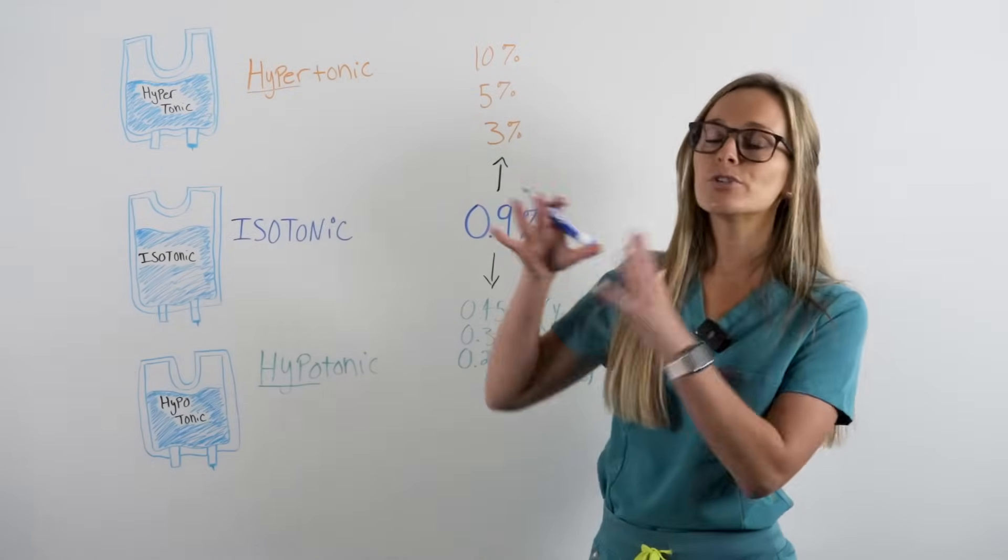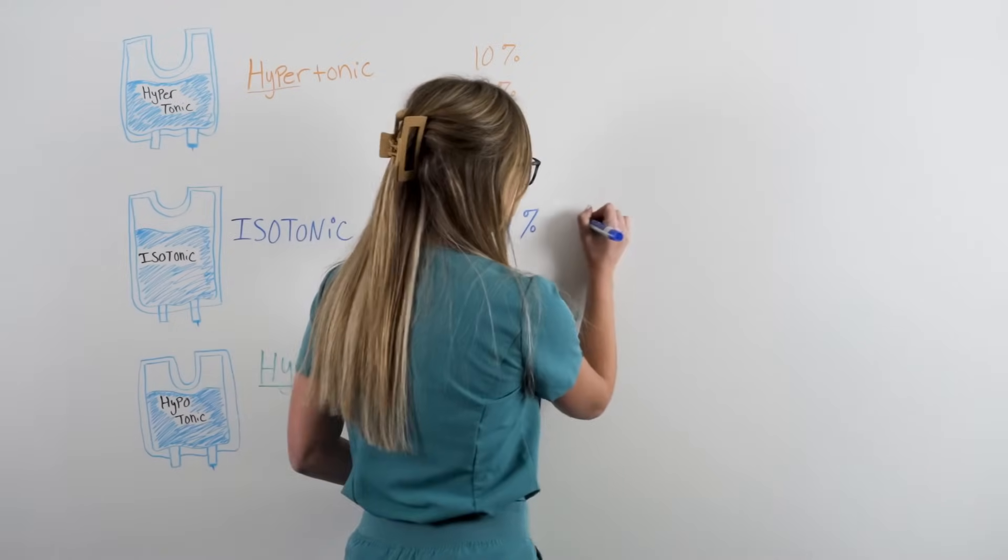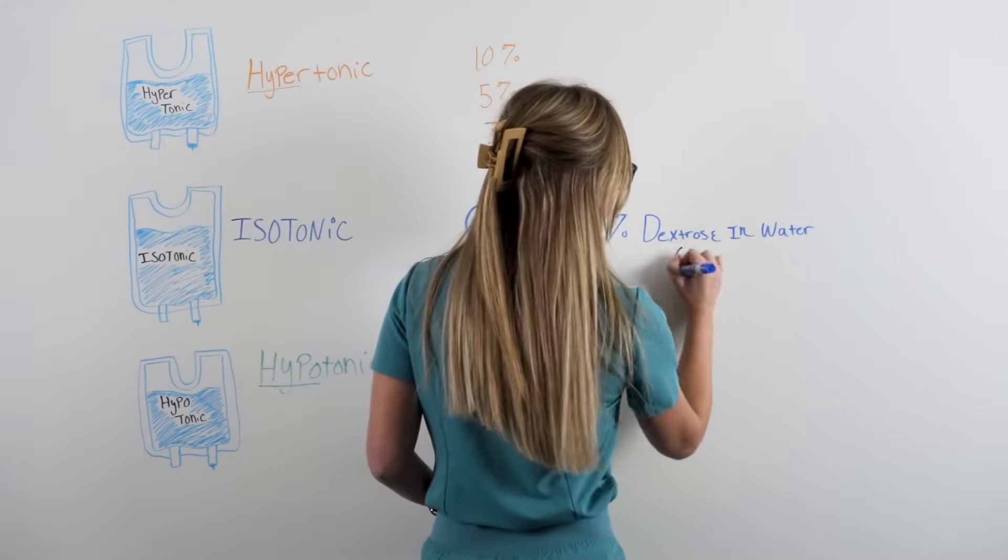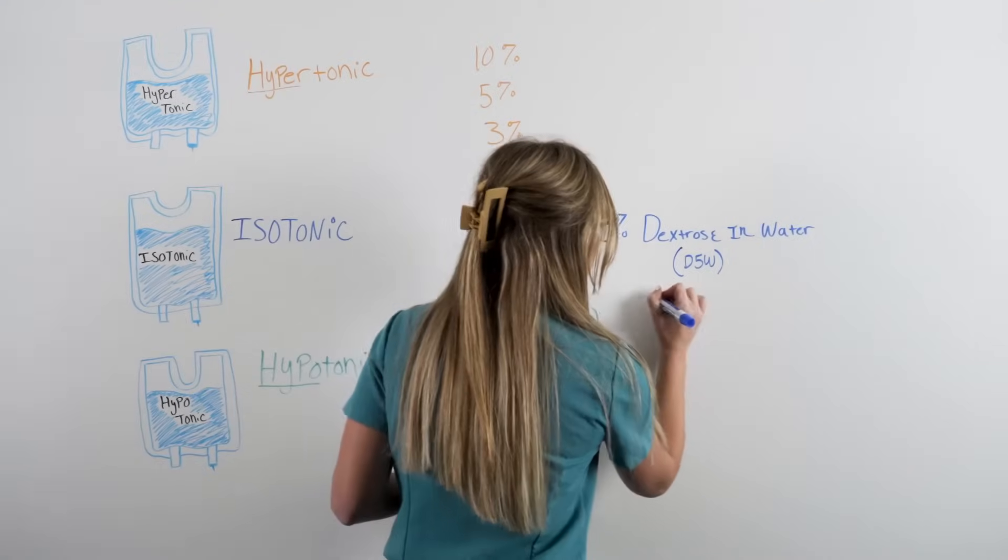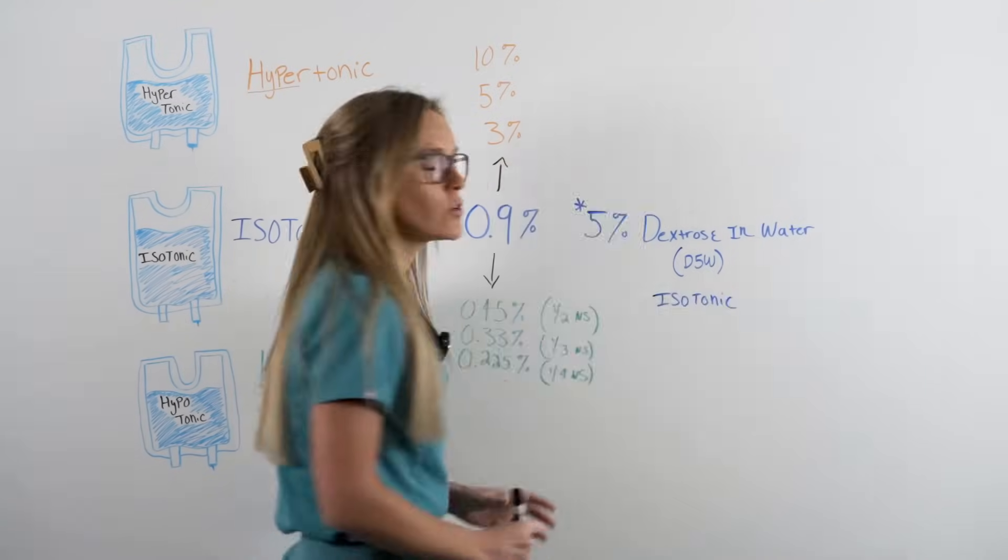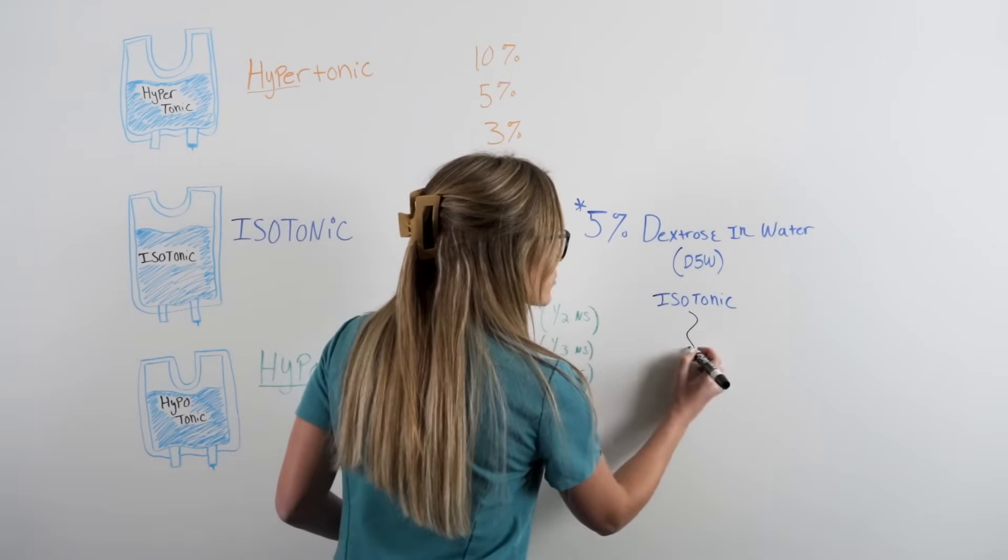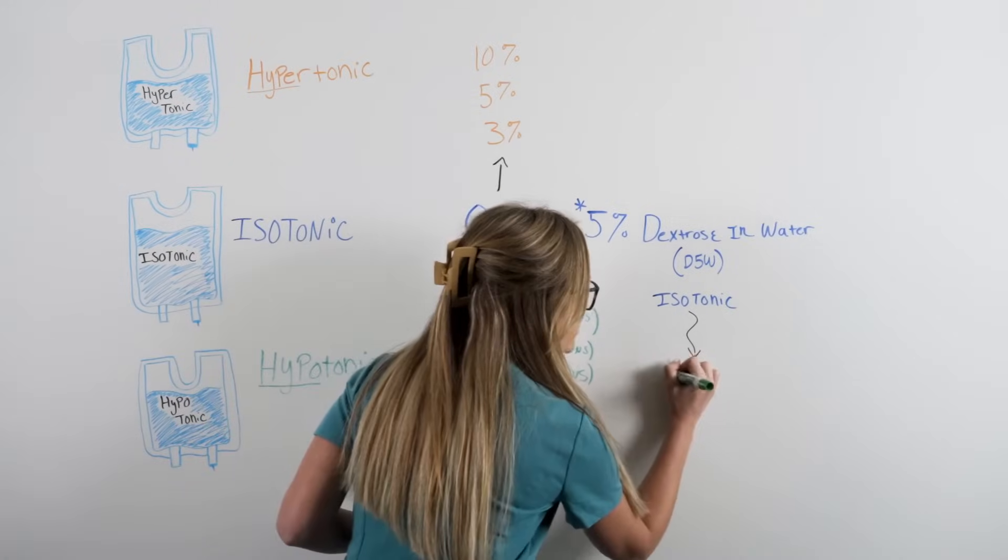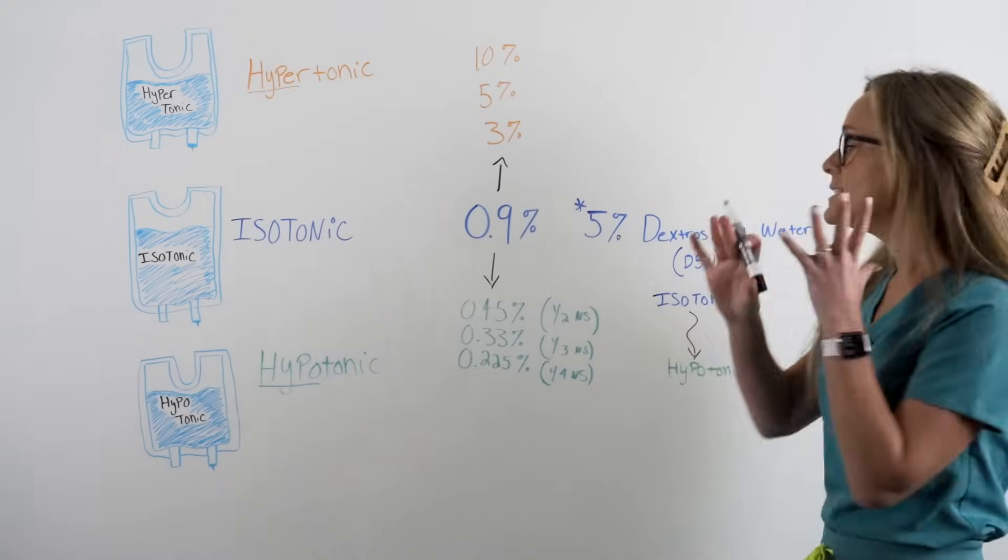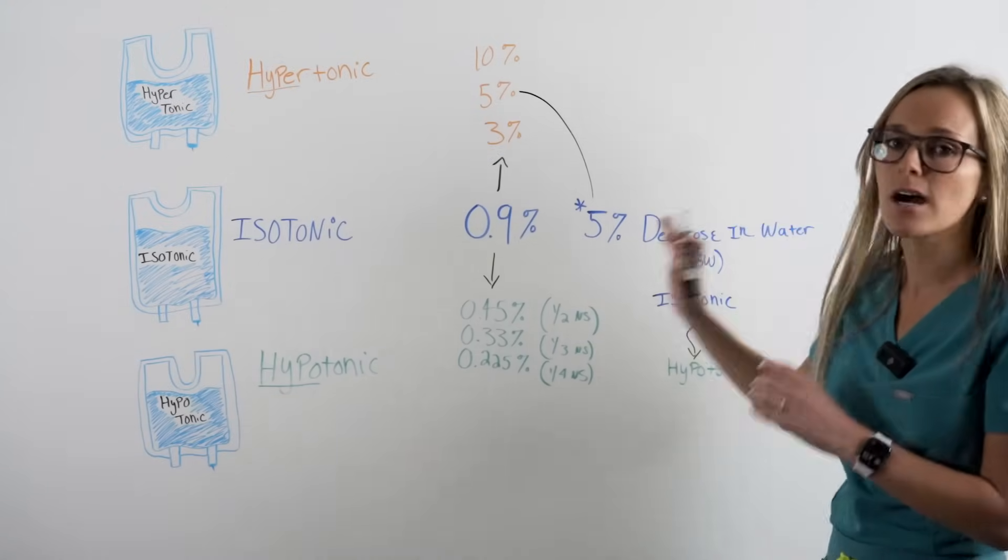Now, there is one exception to this memory trick, and that is 5% dextrose in water. Most commonly, you'll hear this called D5W. This is a very unique type of solution. It starts as isotonic. So when you infuse it into the body, it's an isotonic solution. But as the dextrose gets metabolized in the body, it turns into a hypotonic solution. D5W is the exception. Don't get mixed up with hypertonic solution.